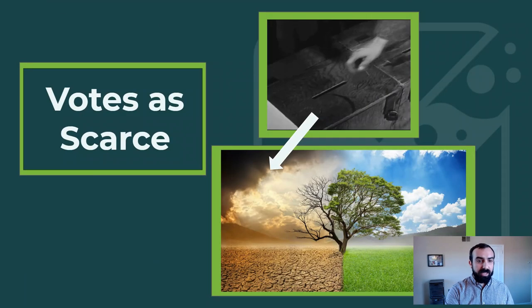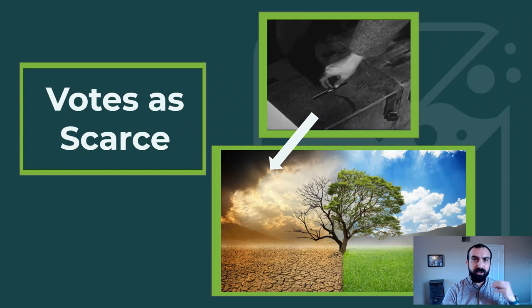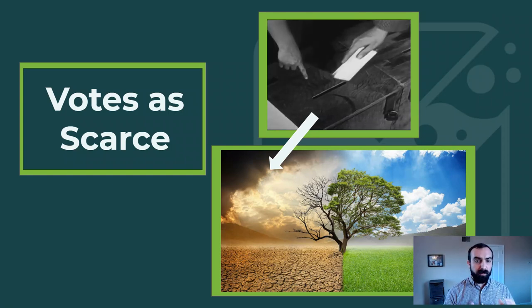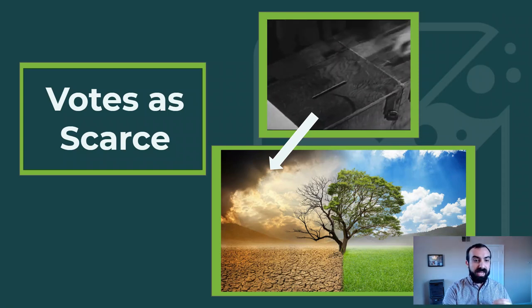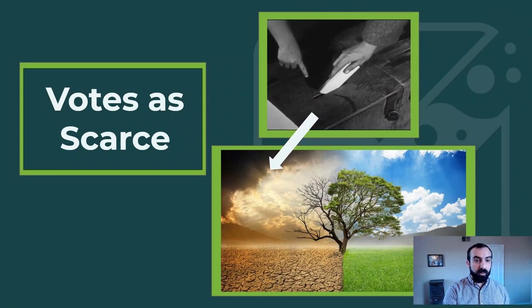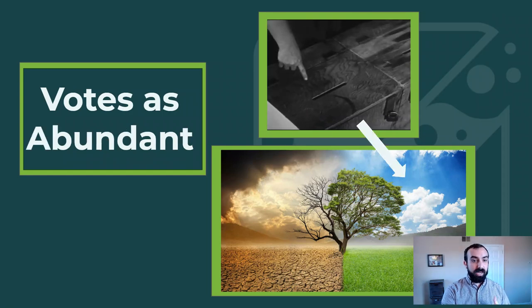So how do we get out of this system and get our community and your issues on the front burner of these campaigns? We have to challenge the original idea this all depends on, that votes have to be a scarce resource. What if we flipped it and votes became an abundant resource?